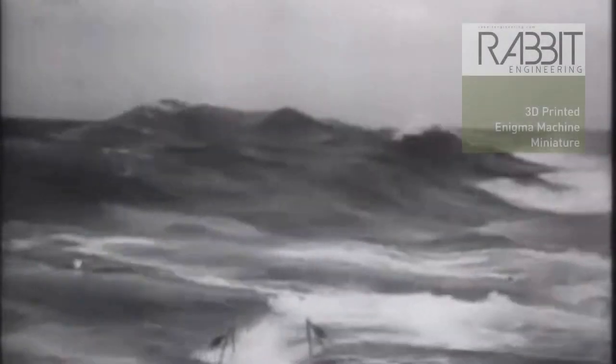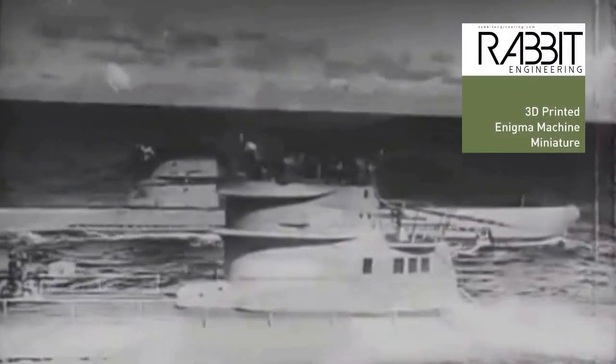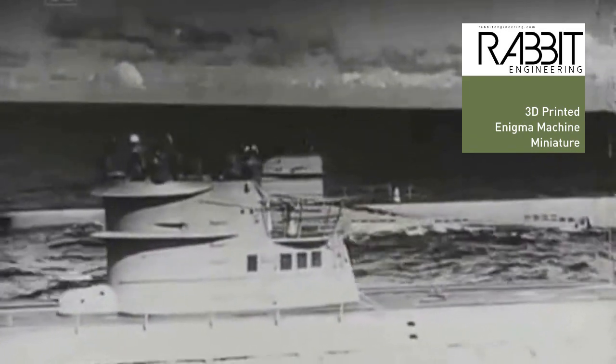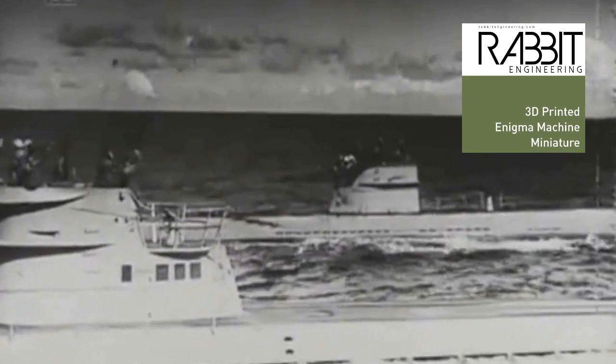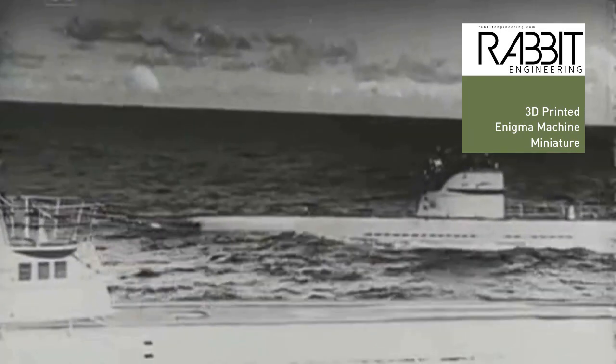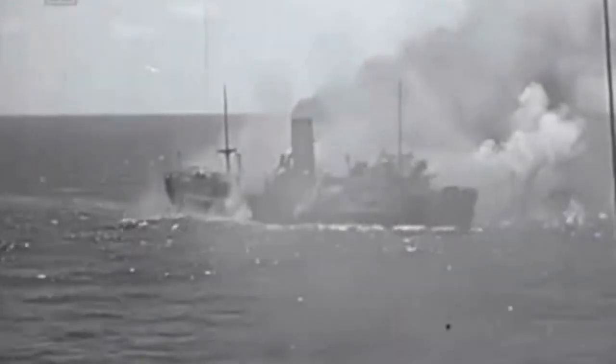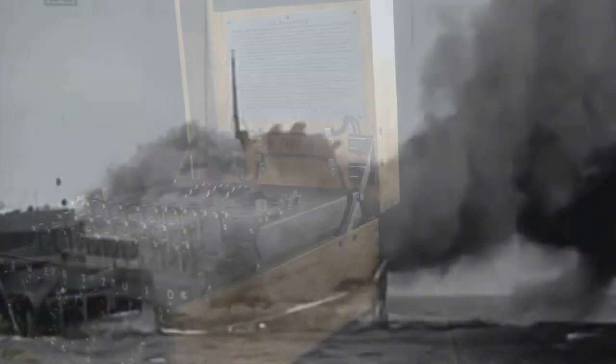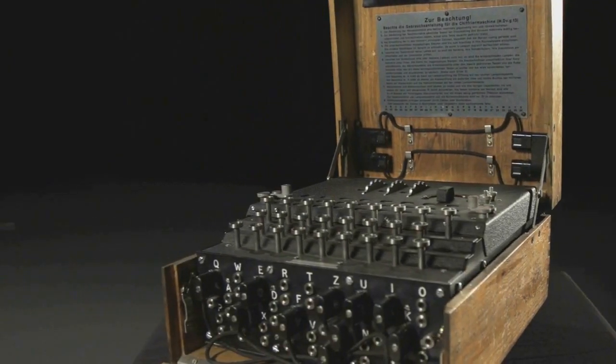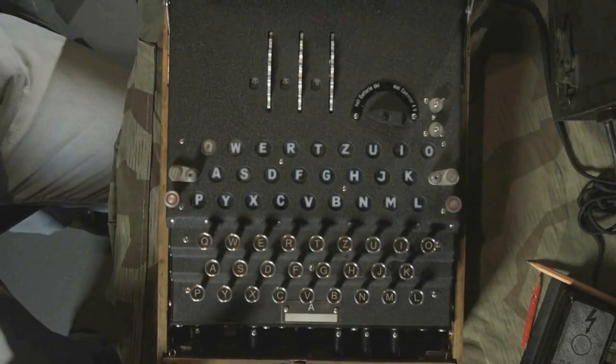During World War II, Nazi Germany was able to almost defeat Great Britain by the use of her U-boats or submarines. The U-boats were able to attack British convoys almost unopposed because of the encrypted transmissions that they were able to do over radio. And the encryption of these transmissions was done through a machine called the Enigma machine, which was an electromechanical encryption device.